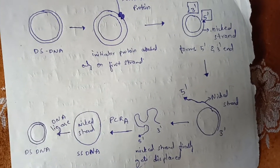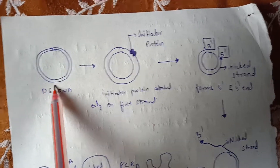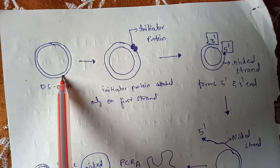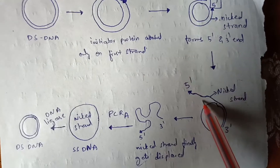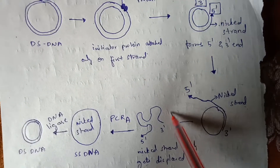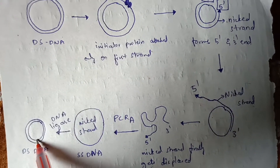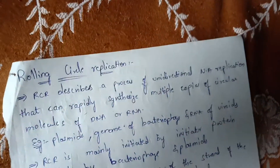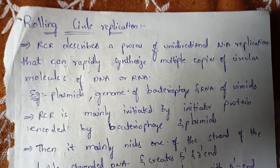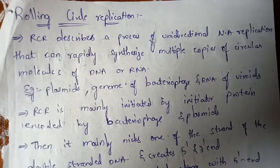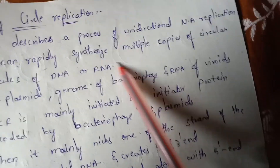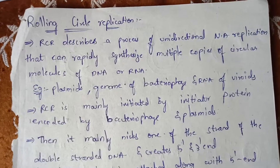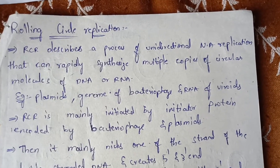To understand RCR, look at the diagram. This is a rolling circular DNA consisting of double-stranded DNA. When it undergoes rolling circular replication, separation of one strand takes place in a rolling, circular manner, and another double-stranded DNA is formed through replication. It is called rolling because the replication takes place in a circular, rolling manner — hence it is also called unidirectional, occurring in a single direction.